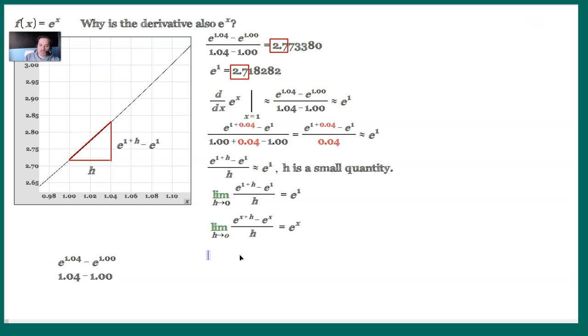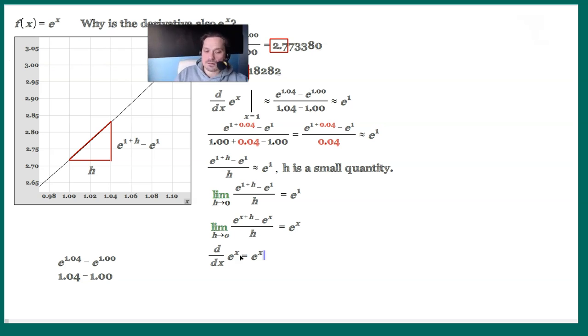And lastly, that limit on the left side is the definition of the derivative, essentially, for any x that you plug in. So in other words, you would have that the derivative of e^x is equal to e^x. And this is a way to think about why the derivative of e^x is the same thing, e^x.